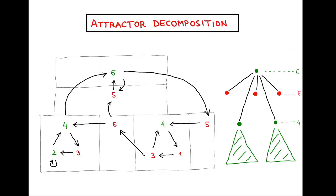Now I would like to argue that once we take a graph in which every cycle is even — this is an example of a graph we've already seen previously — we can extract from it a tree-like structure. That structure will take the form of an ordered tree, where the order is quite important, and we will call this structure the attractor decomposition of such a graph with only even cycles.